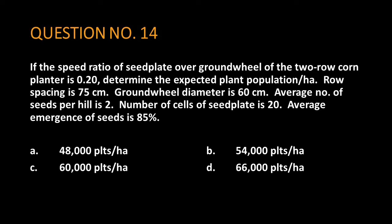Question number 14. If the speed ratio of seed plate over ground wheel of the two-row corn planter is 0.20, determine the expected plant population per hectare. Row spacing is 75 centimeters. Ground wheel diameter is 60 centimeters. Average number of seeds per hill is 2. Number of cells of seed plate is 20.